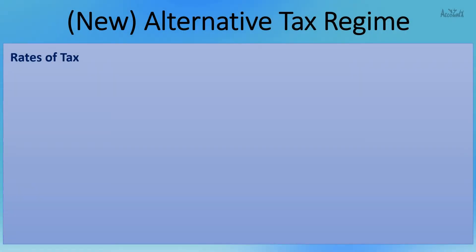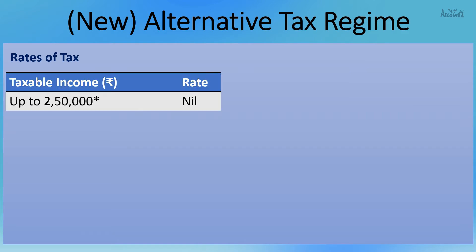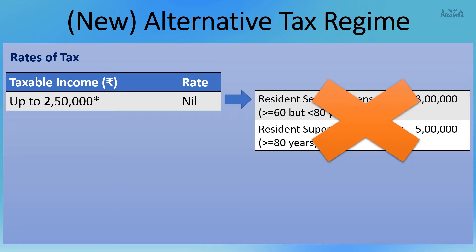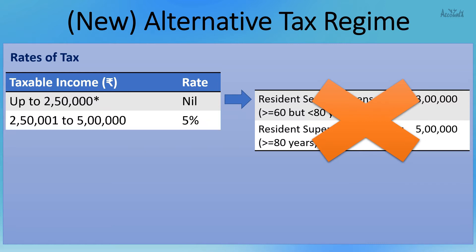Now let us see the rates of tax under the alternative tax regime. Here too, the basic exemption limit remains the same — no tax up to 2.5 lakhs. But unlike the normal tax regime, no separate basic exemption limit is available to senior citizens and super senior citizens who are residents. For income more than 2.5 lakhs up to 5 lakhs, the tax rate is 5%, same as the normal tax regime.